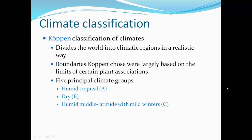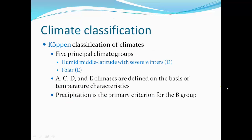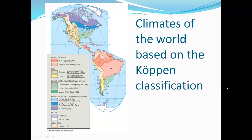The Köppen Classification divides the world into climatic regions in a realistic way. The boundaries Köppen chose are largely based on the limits of certain plant associations, so he's looking at vegetation as an indicator of climate. Five principal climate groups: humid tropical A climates, dry B climates, humid mid-latitude with mild winters C climates, humid mid-latitude with severe winters D climates, and polar E climates. A, C, D, and E classifications are defined on the basis of temperature characteristics, while precipitation is the primary criterion for the B group.